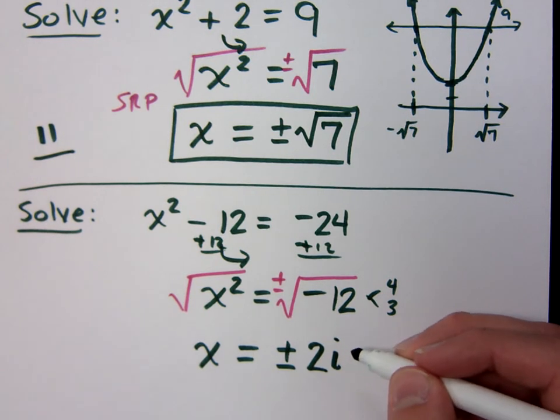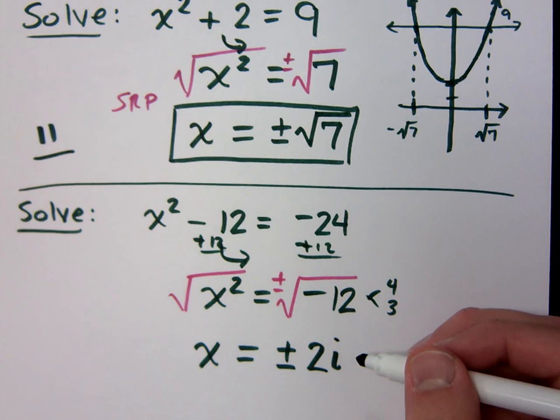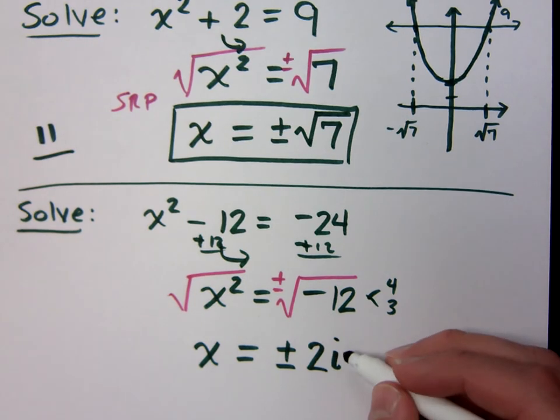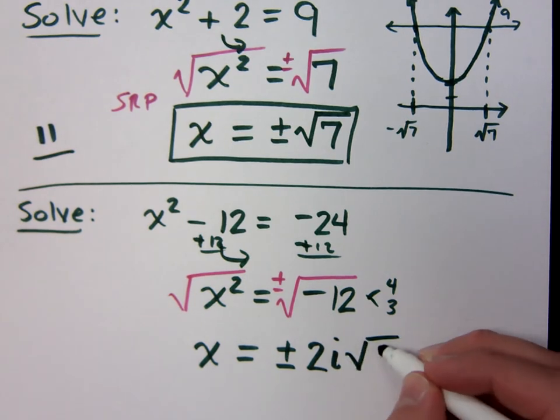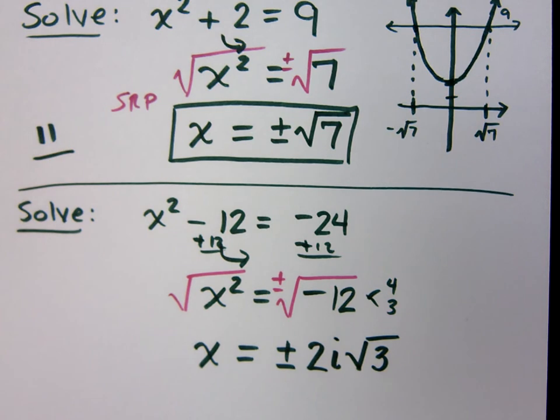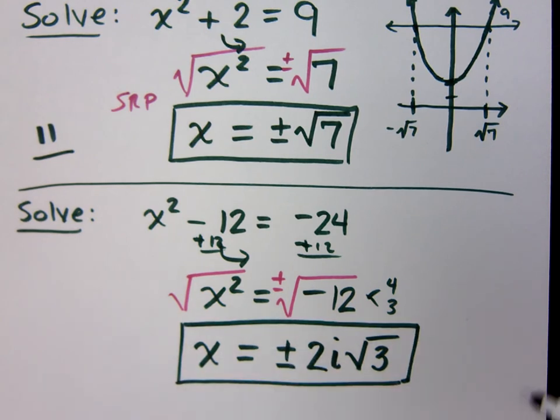Now calm down. Don't be angry. The numbers are just doing all they can to help you. This is plus or minus 2i times the square root of 3. What do you guys think? I like it. Great.